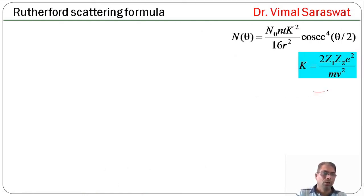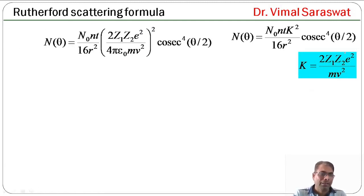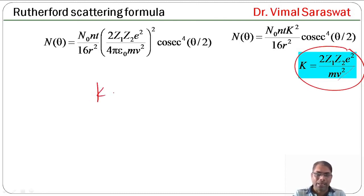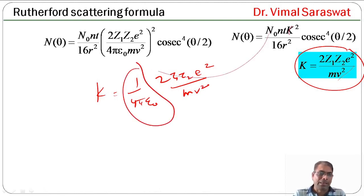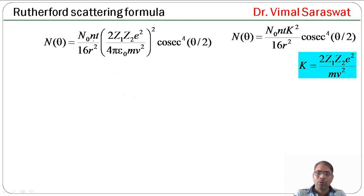Since k = 2·Z₁·Z₂·e² / (mv²) in CGS units, and in SI units k = (1/4πε₀) · 2·Z₁·Z₂·e² / (mv²), we substitute to get the Rutherford scattering formula: n_θ = (n₀·n·t / 16r²) · (2·Z₁·Z₂·e² / 4πε₀·mv²)² · cosec⁴(θ/2).